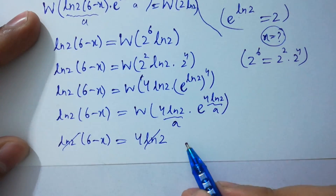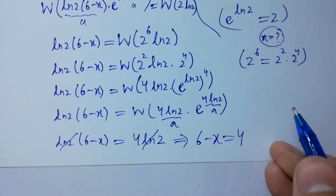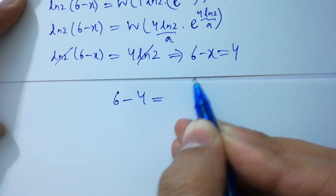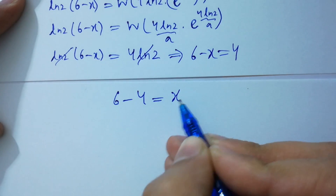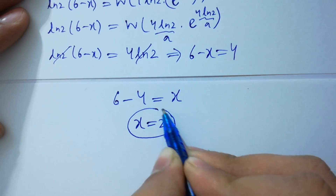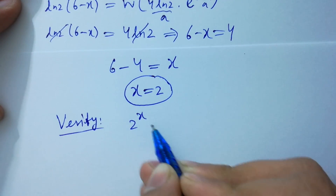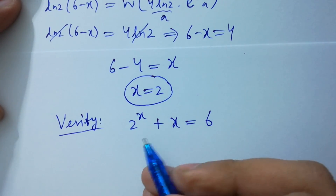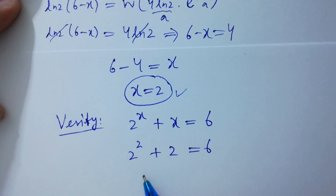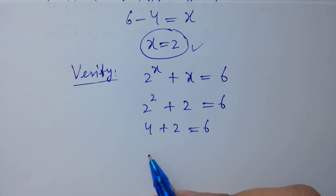Natural log 2 on both sides cancels, giving 6 minus x equals 4. Therefore 6 minus 4 equals x, so x equals 2. Let's verify: 2 to the power 2 plus 2 equals 4 plus 2 equals 6. Left hand side equals right hand side. Verified!